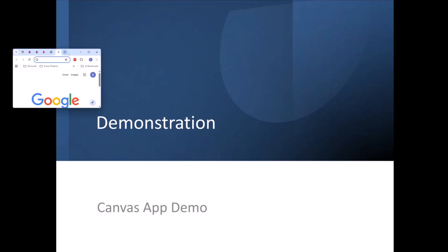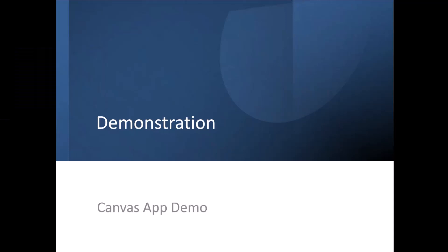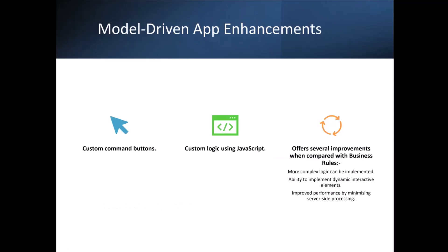Next on the list is model-driven apps. With model-driven apps and ProCode, we're typically looking at JavaScript and ways that we can bring JavaScript into our model-driven apps. There are a couple of different ways we can do that. Firstly, we've got custom command buttons — where you can create a button within your model-driven app form and when you click that button, it'll execute some JavaScript code.